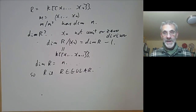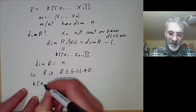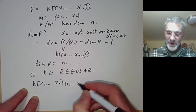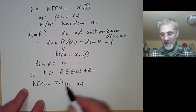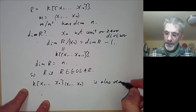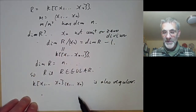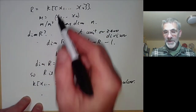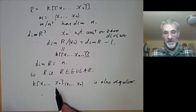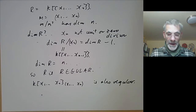You can also see that the localisation of the polynomial ring at the ideal (x₁,...,xₙ) — in other words, looking at the local ring at a point — is also regular. That's because its completion is the power series ring, and a ring has the same dimension as its completion and the same cotangent space as its completion. So if the completion of a local ring is regular, then the ring is regular.